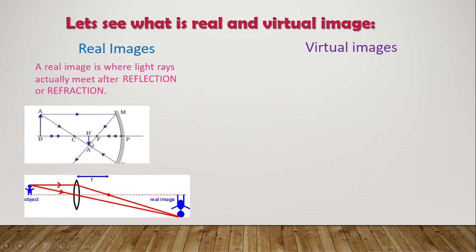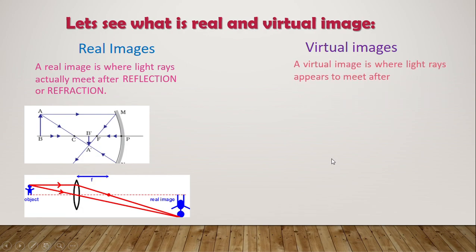Real images can also be formed by refraction. You can see here we have a convex lens and incident rays going and meeting at a point — both refracted rays are actually meeting. So the image formed is again a real image.